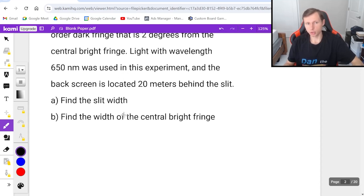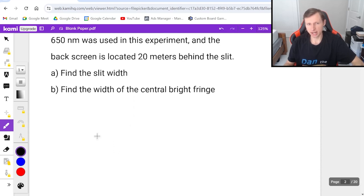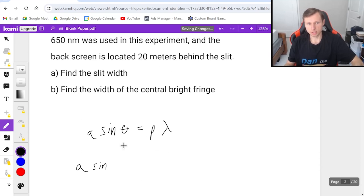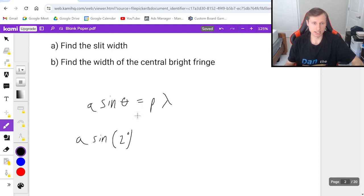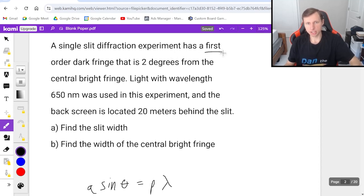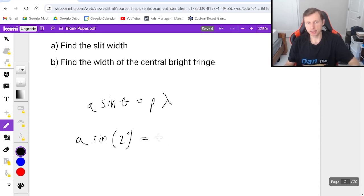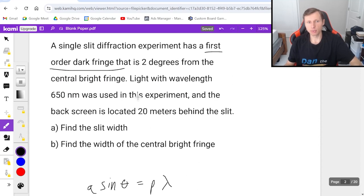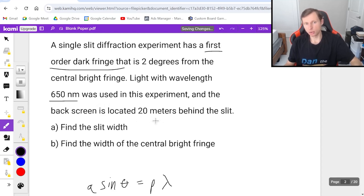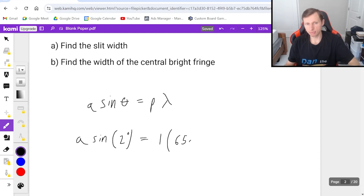For part A, we use the main equation a sine theta equals p lambda. They gave us all the information we need. It's a times the sine of two degrees equals p, which is one for the first dark fringe, times lambda, which is 650 nanometers. You have to convert nanometers to meters by multiplying by 10 to the minus ninth.